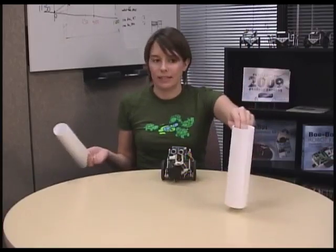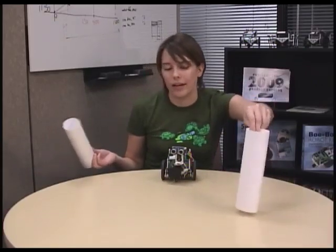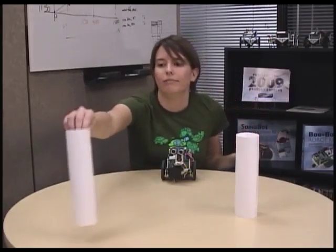Remember our 8.5 by 11 pieces of printer paper from the PingDAR activity? Turns out, they're great for this one as well. Go ahead and set them somewhere within a 1 meter radius of your Bobot. I would actually start them out a little bit closer than that. Place them at distances so one is noticeably closer than the other.